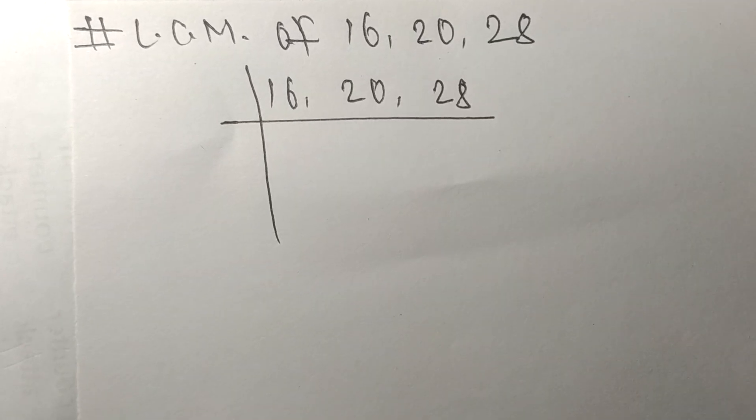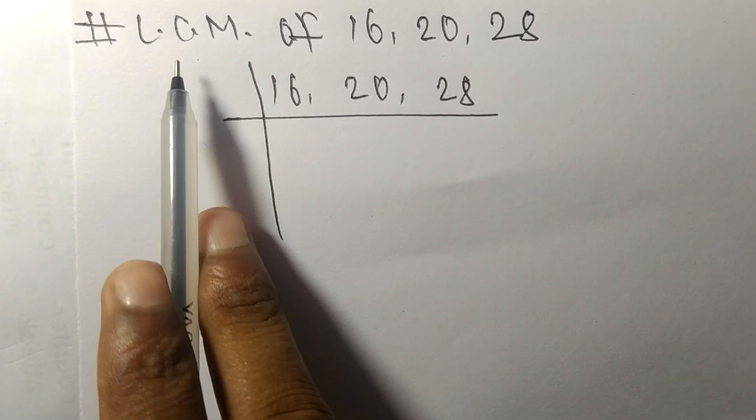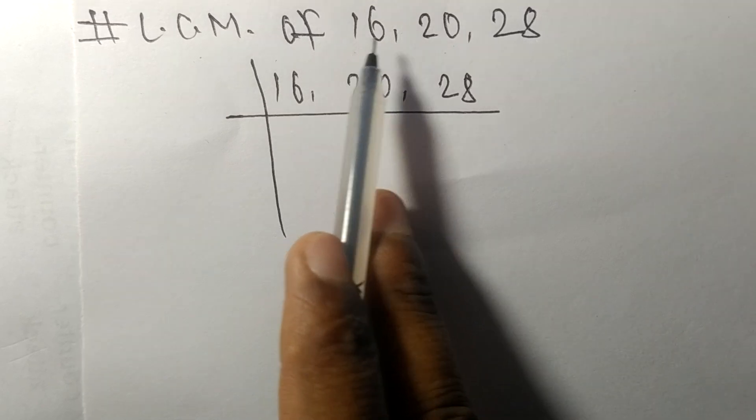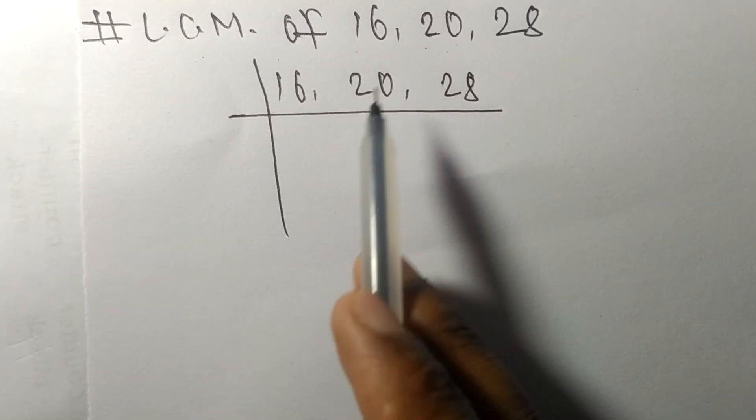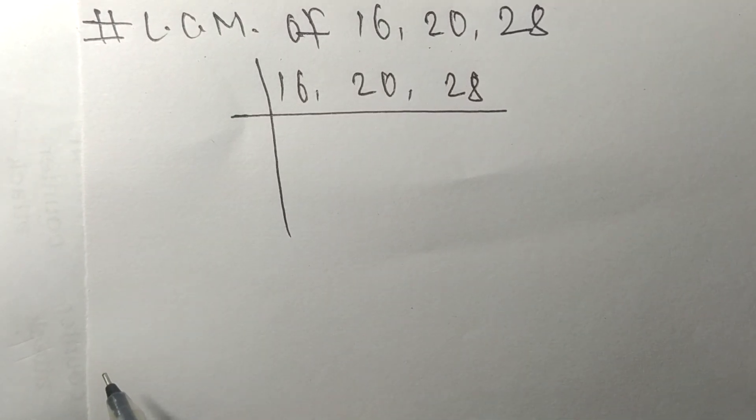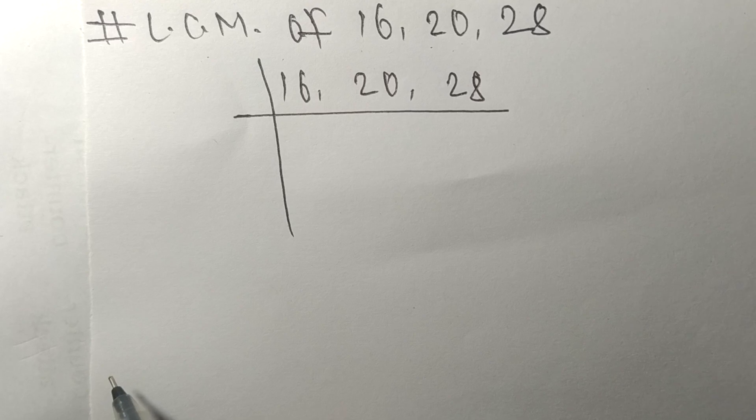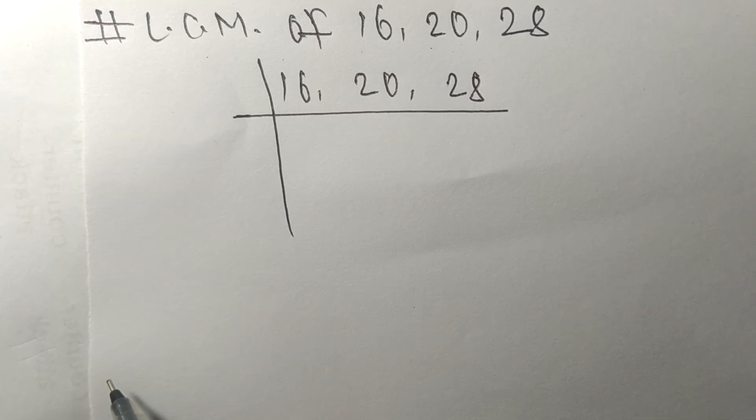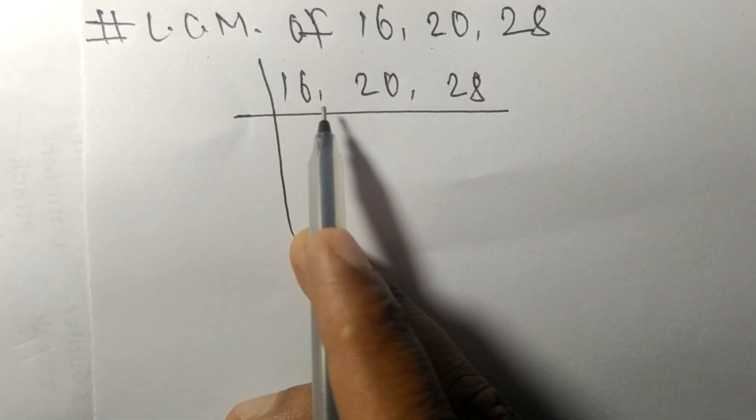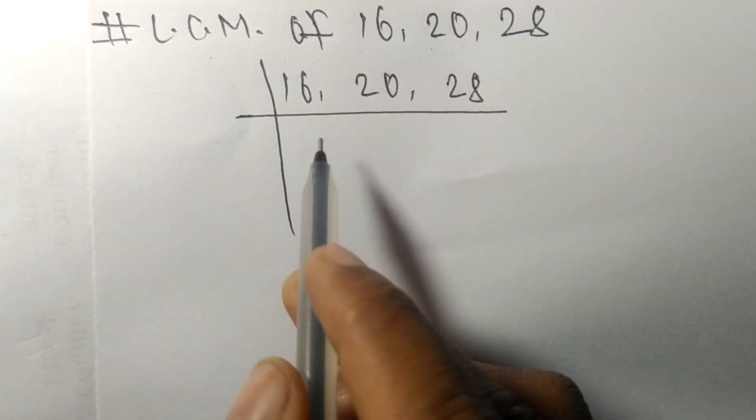So today in this video we shall learn to find the LCM of 16, 20, and 28. To find LCM we have to choose the lowest number that can exactly divide at least any two of these numbers.